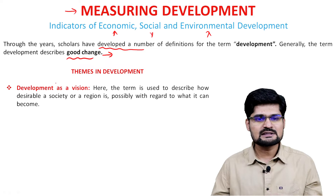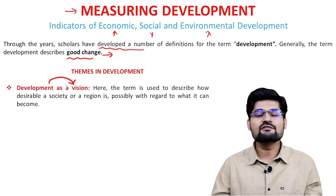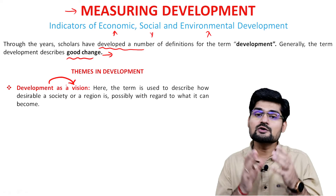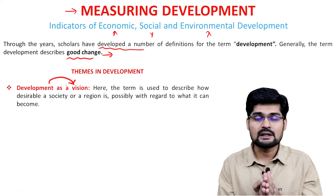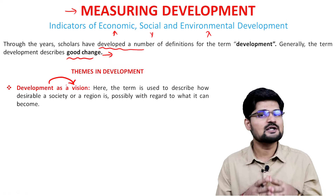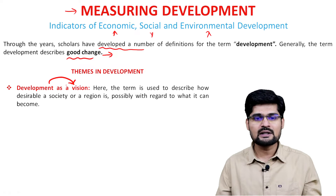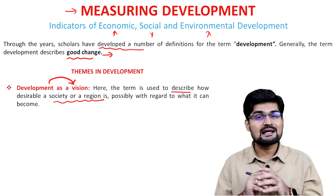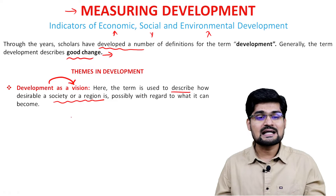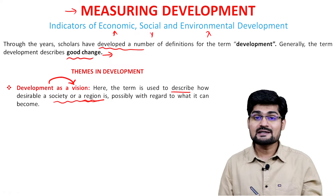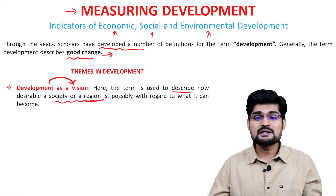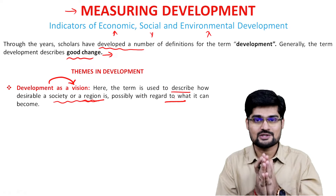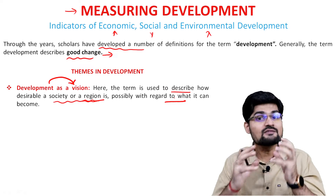The first theme is development as a vision. When we say we are visionaries looking towards development, this is one of the first themes. Here the term is used to describe how desirable a society or a region is, and possibly with regard to what it can become in the future. That's our vision.